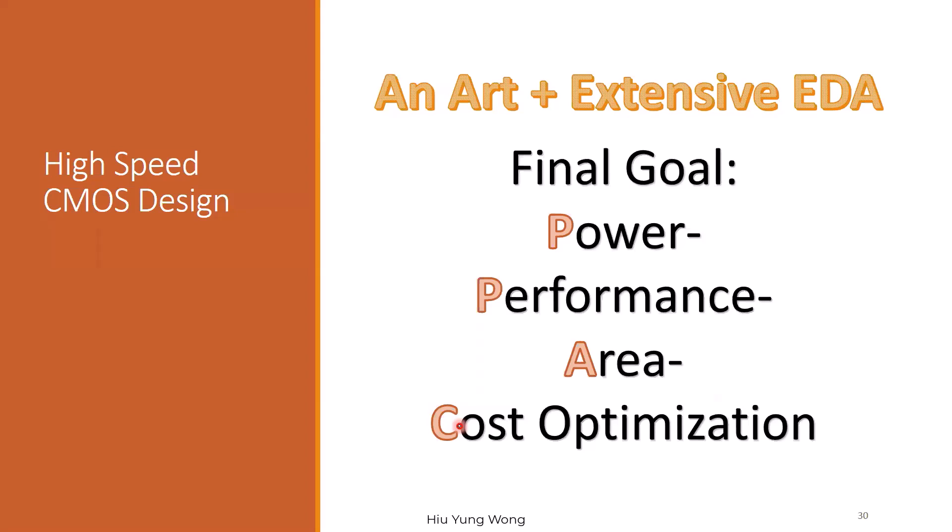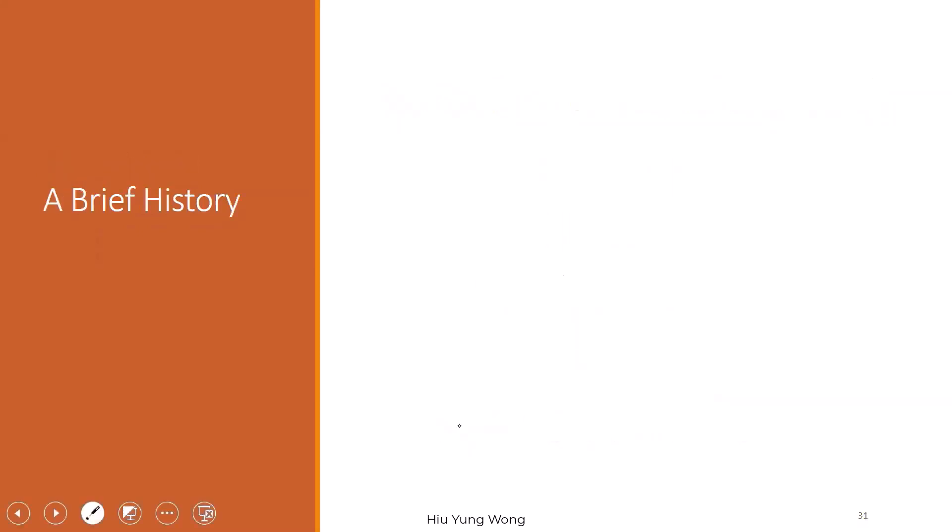Cost is the most important thing, and it's related to market size. Sometimes the cost looks large, but it's not a problem if everyone uses it. Think about Tesla — if Tesla can make everyone buy their car, their cost will reduce and everyone can afford it. PPAC is something we are going to talk about a lot in this class, and you always need to bear it in mind.